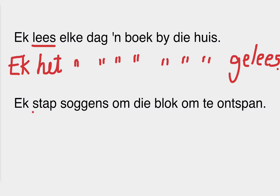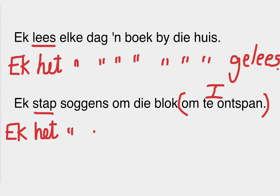Look at this one. Your verb is stap — I walk in the mornings around the block to relax. Now as soon as you have om te ontspan, that is your infinitief. Remember when we did stompie, verb 1 and verb 2 come before the infinitief, so you can almost ignore the infinitief and do your past tense as normal. Ek het sochens om die blok gestap — first you finish your sentence with verb 2, and then the infinitief comes after that.